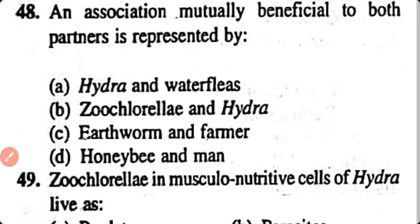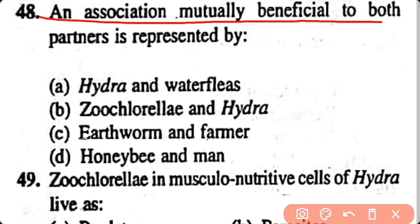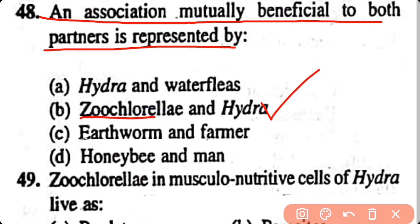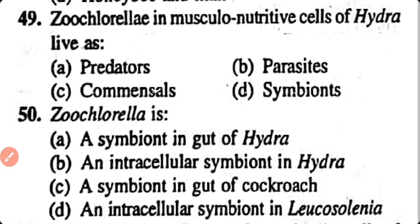Question number 48. An association mutually beneficial to both partners is represented by: Hydra and water fleas, Zoochlorella and Hydra, earthworm and farmer, honeybee and men. Option B. Zoochlorella, a type of algae, and Hydra show a symbiotic relationship in which both get benefited.